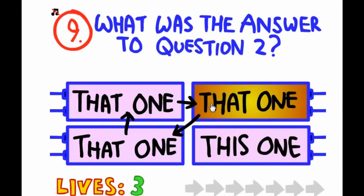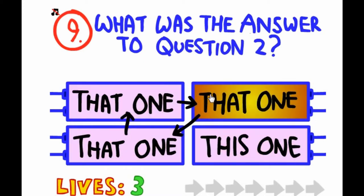What was the answer to question number two? Okay, so it starts here, it goes down and it goes up, and then it says to go right, and this is your answer. Choose food. Don't think, don't get confused. It looks like an olive, but actually it's cheese. Choose food.